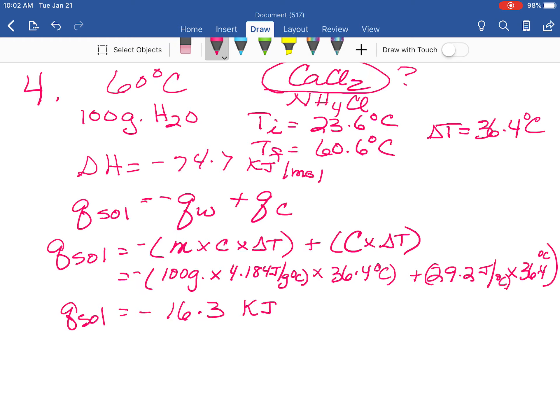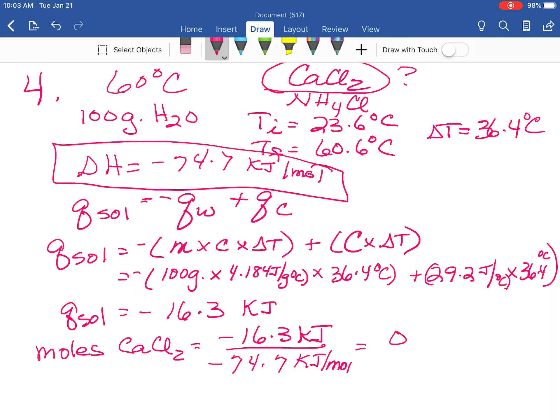We can then use that to figure out the moles of calcium chloride that we need. So we will take our negative 16.3 kilojoules and we will divide it by this molar enthalpy of calcium chloride that you calculated as part of your lab calculations. And you should find that you need somewhere around 0.218 moles of calcium chloride.